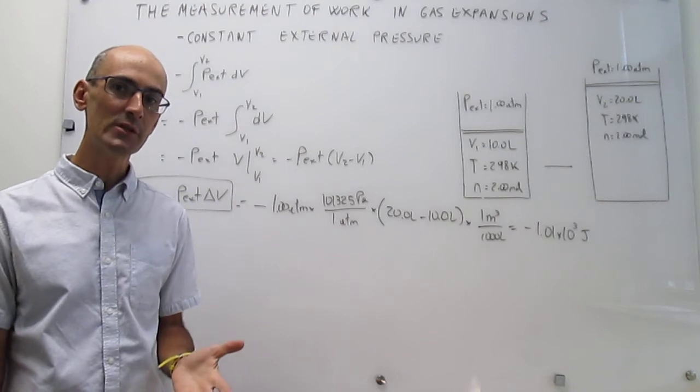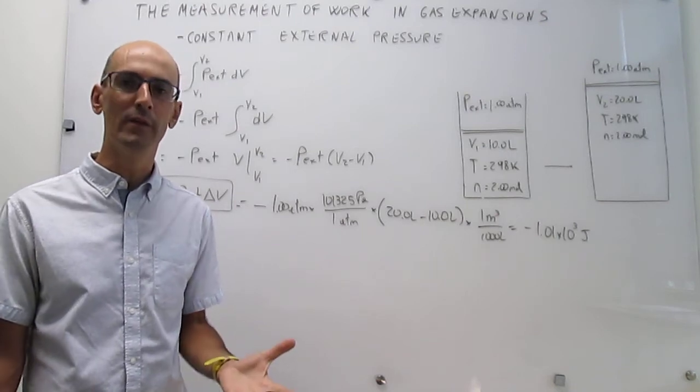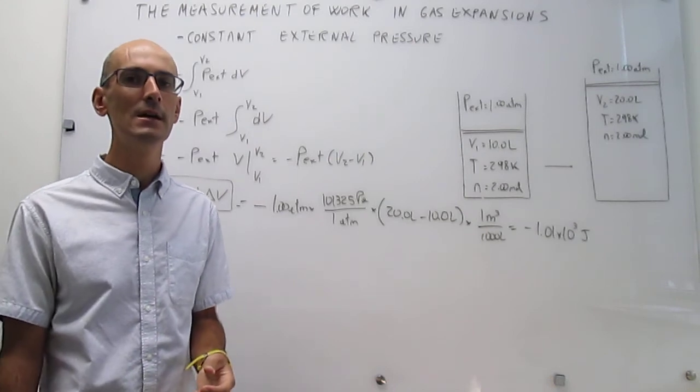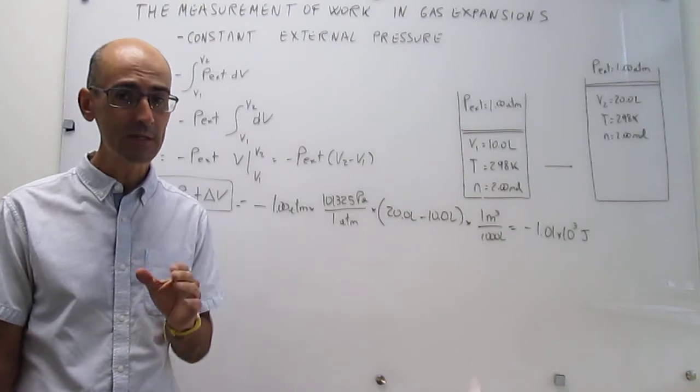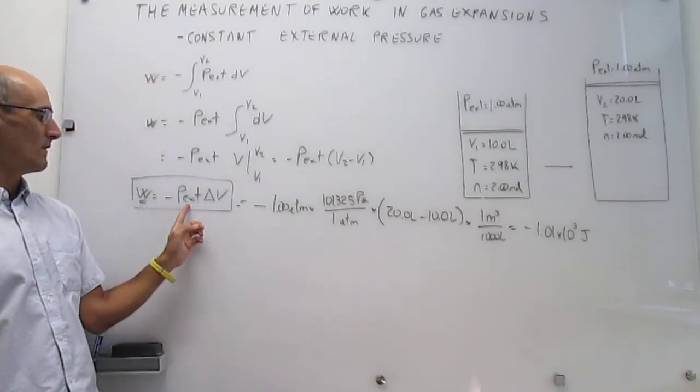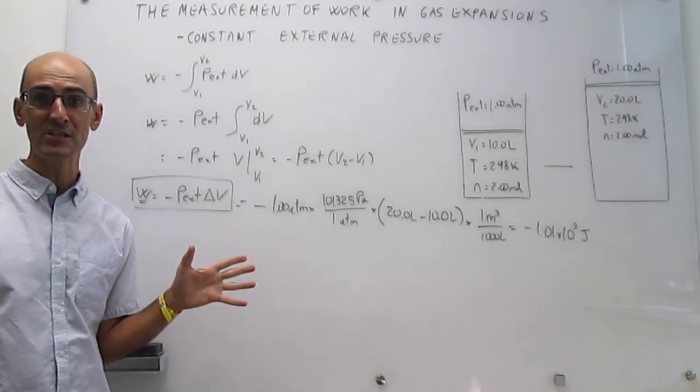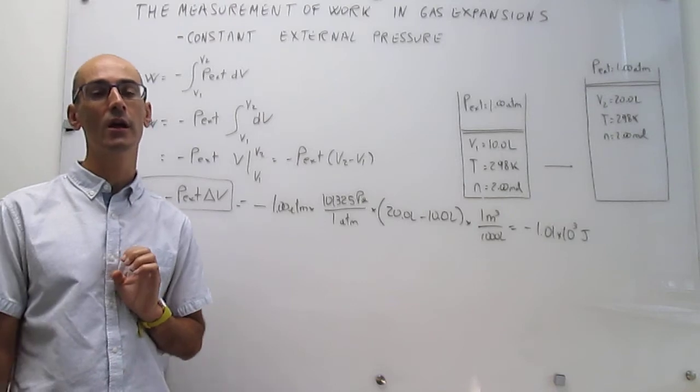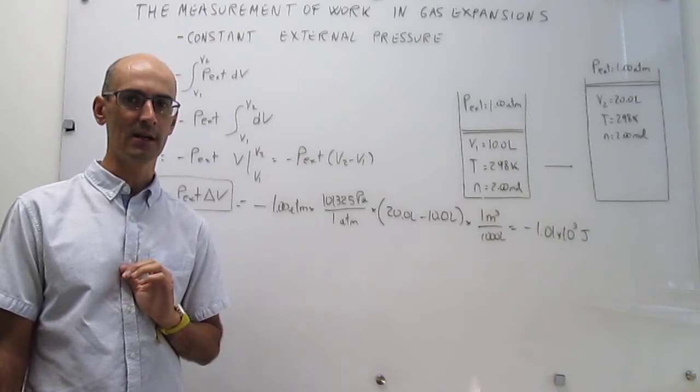Then what will happen is that the external pressure is zero if you're doing this in a perfect vacuum. A perfect vacuum does not exist, but this is just a useful limit to illustrate a point. So if you're in a perfect vacuum, then the idea is that the external pressure is zero, and that means that this gas would actually not be doing any work during this expansion against a perfect vacuum.